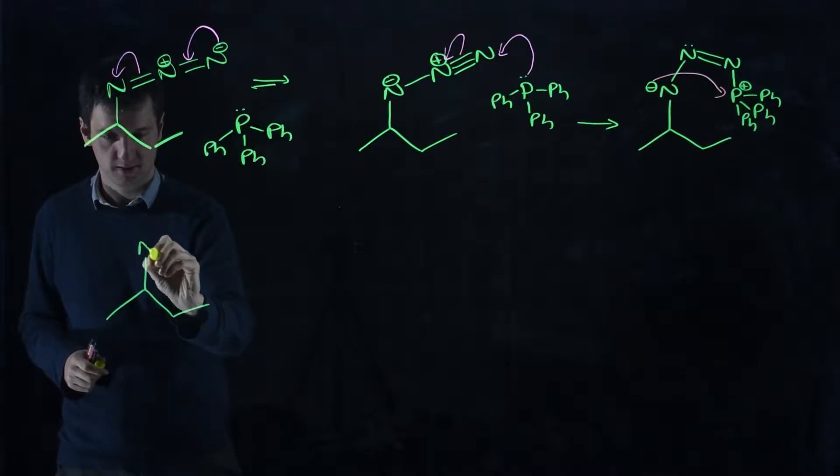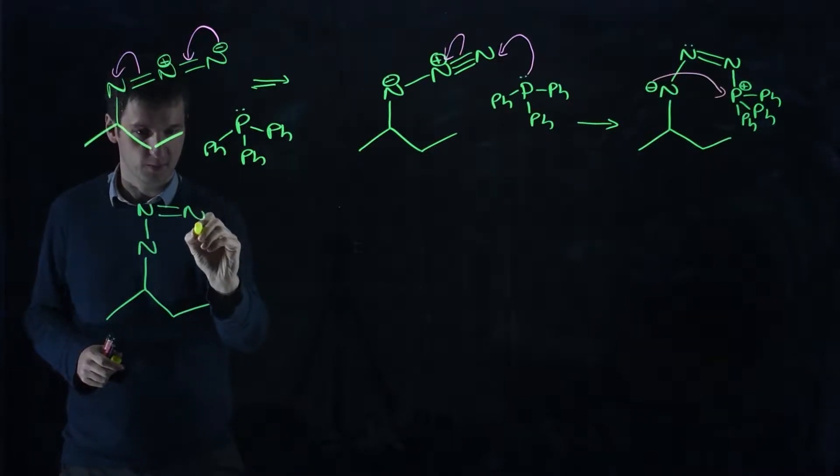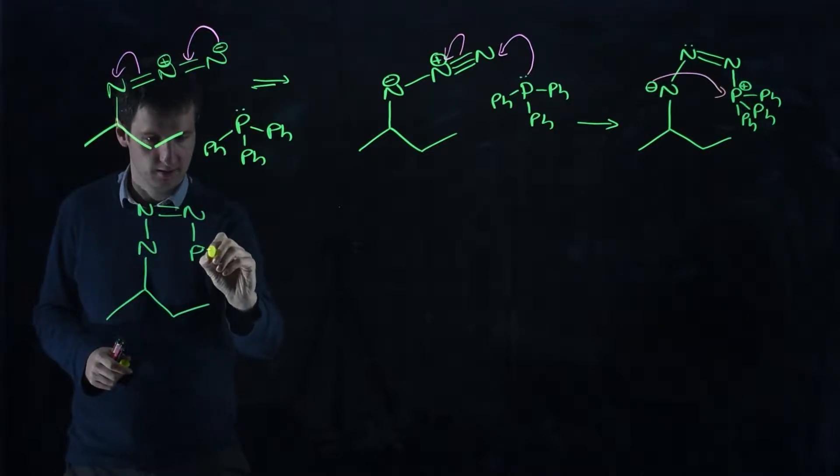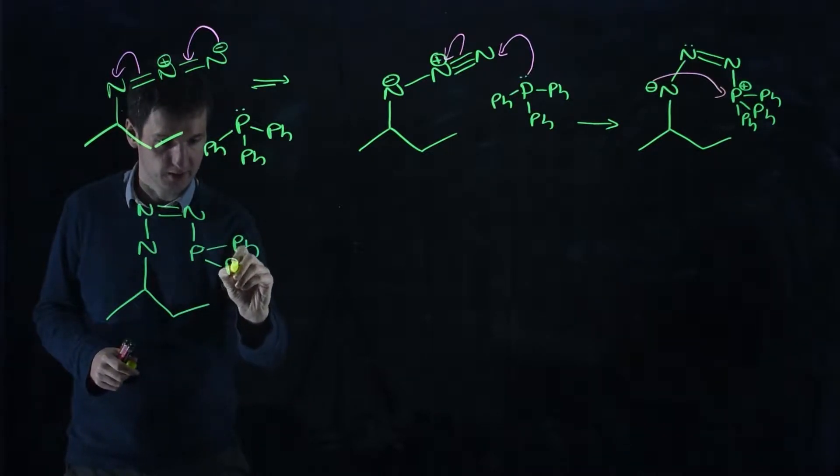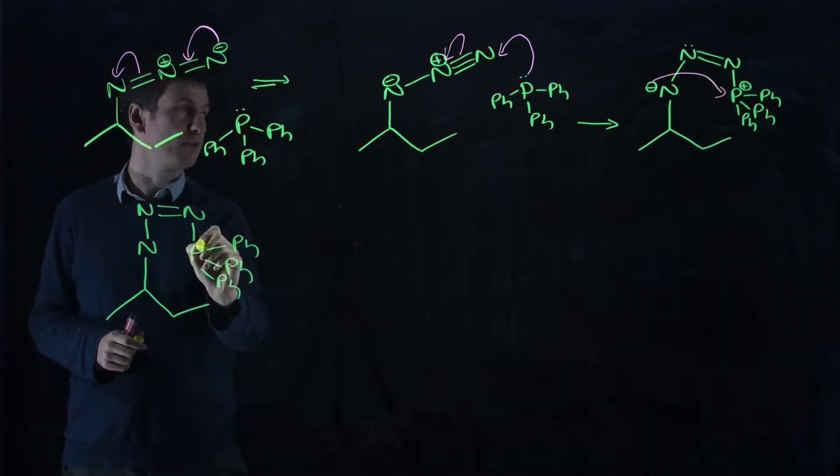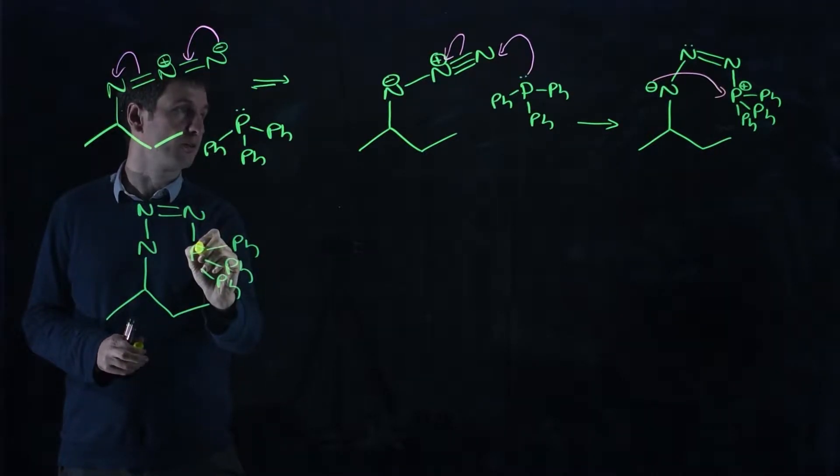So these are all the bonds that were there until we drew in our arrow. Triphenylphosphine that had a positive charge, but it's got an arrow going to it.